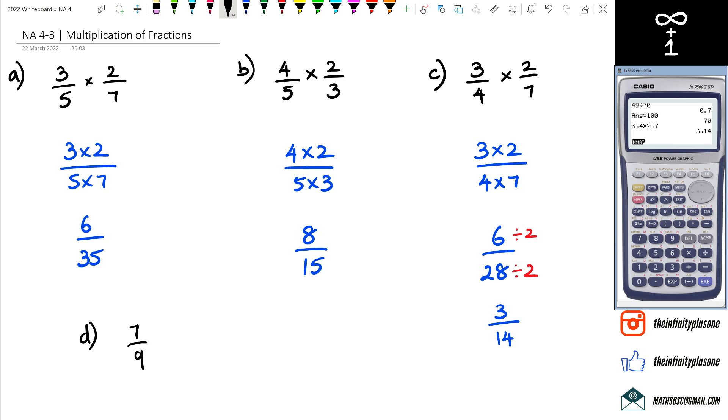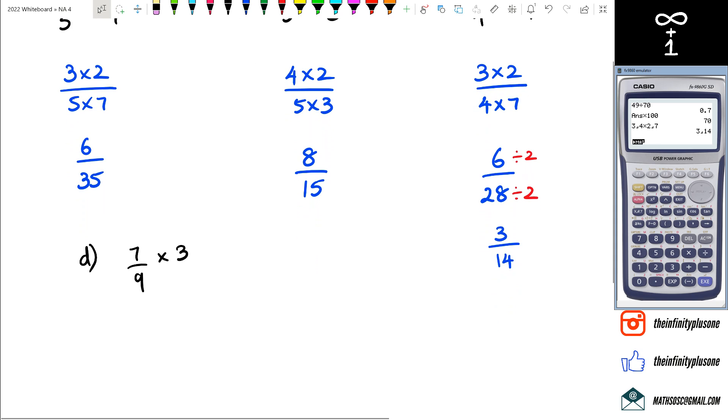In this case, remember that the numerator has actually got a three, so this would just be seven times three divided by nine, which is equal to 21 over nine.